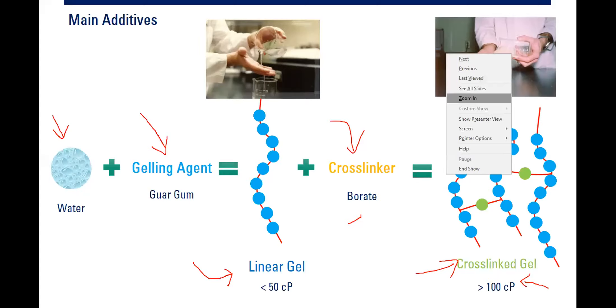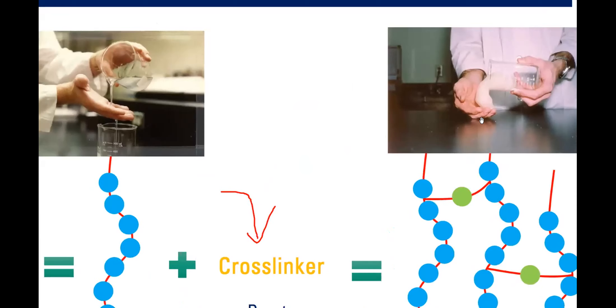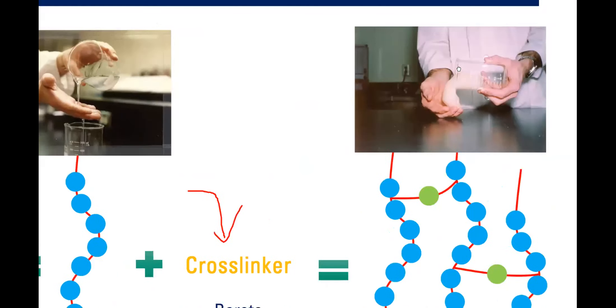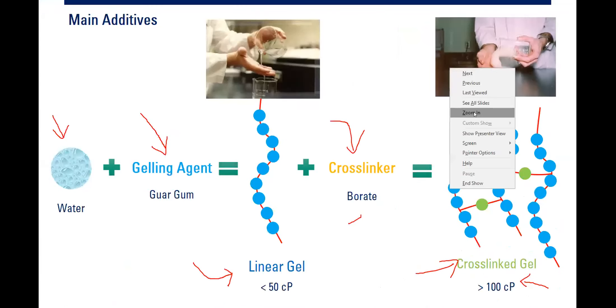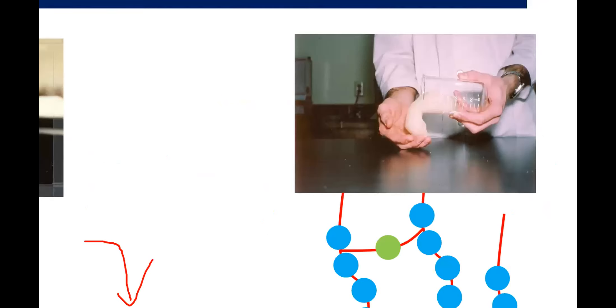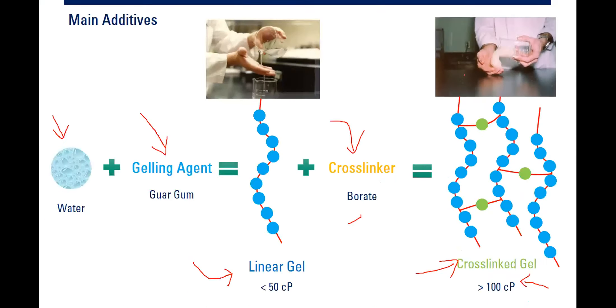The cross-link gel looks quite different from linear gel, as shown in the picture. By using this cross-link gel as the fracturing fluid, we can assure it will carry the proppant through the tubing and casing and place it inside the fractures. However, we don't want this gel to remain permanently inside the fractures because it will block reservoir flow and fluid flow.